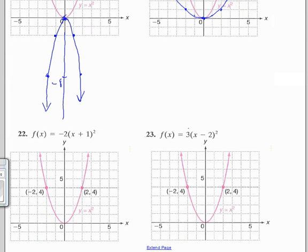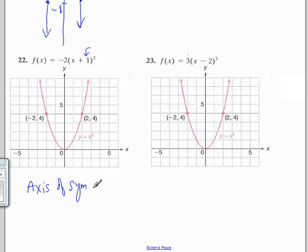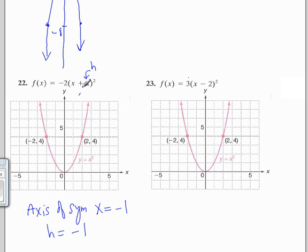Let's look at number 22. Here, h is negative 1. In other words, the axis of symmetry is at negative 1. And x equals negative 1. That's our h. Because x minus negative 1 is x plus 1. So this means horizontal shift to the left 1.